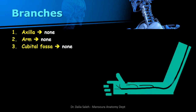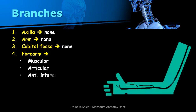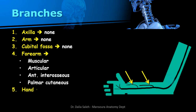Regarding the branches of the median nerve: in the axilla, arm, and cubital fossa it has no branches. In the forearm, it gives muscular branches, articular branches, the anterior interosseous nerve, and then the palmar cutaneous nerve. When it enters the hand, it gives muscular branches to the thenar muscles and palmar digital branches to supply the skin of the digits.